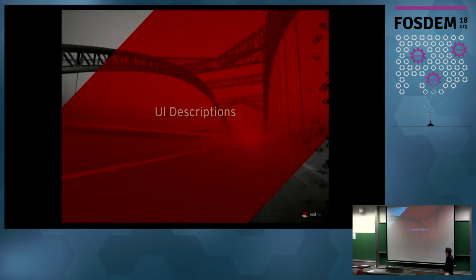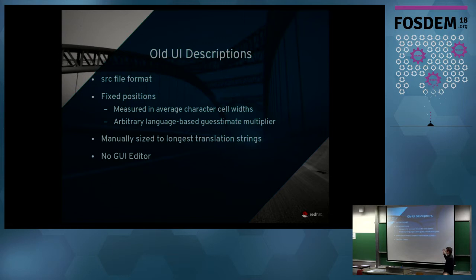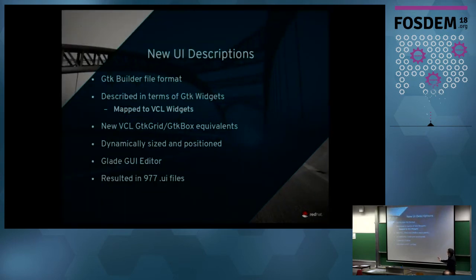Some backstory on UI descriptions and where we've come from. All of our dialogs used to be described in a .src file format where every widget was a fixed size, measured in arbitrary character cell widths. When you loaded the UI under German it would multiply everything by 105% because German tends to be longer; under Japanese it would divide by some amount because those texts tend to be shorter. So you had this kind of guesstimate arbitrary system with no GUI editor.